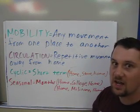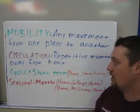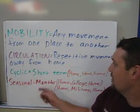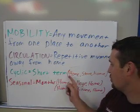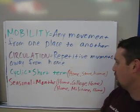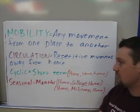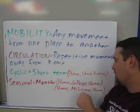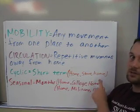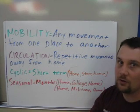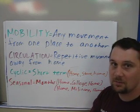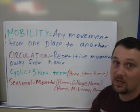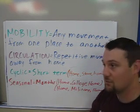There are two types of circulation mentioned in this course. One is called cyclic, and that is short-term movements from your house — meaning you start at home, you go to the store, and then you go back home. This is something people do every week, maybe every day for some families.